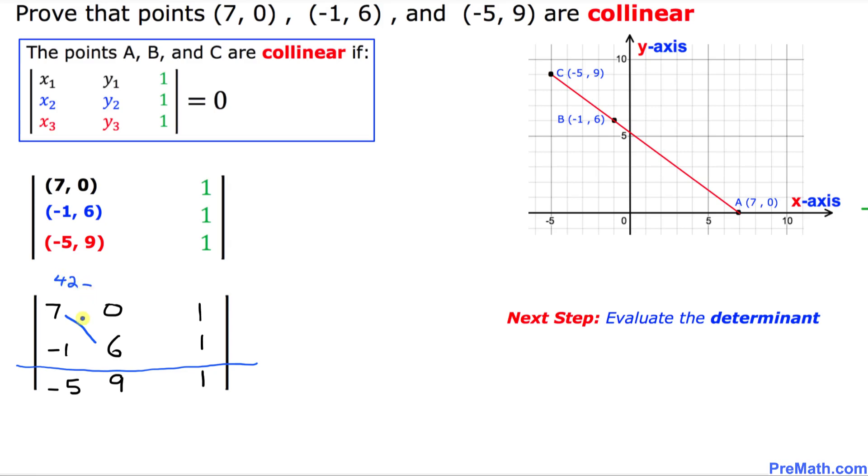Then always put a minus sign. And then 0 times negative 1 is 0. That's going to give us 42. This 42 is going to go in the opposite side right up here.